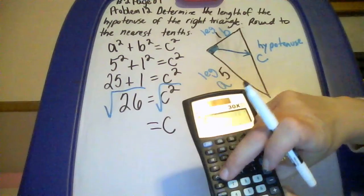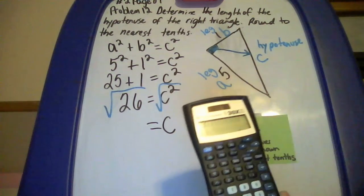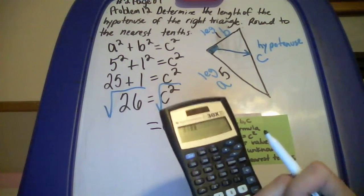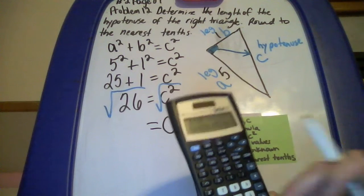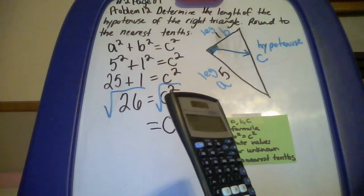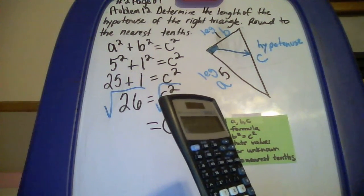Press 2nd, X2, the X squared key, and then type in 26, and press equals. And you get about 5.099019514.